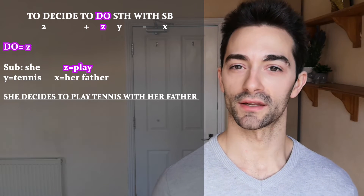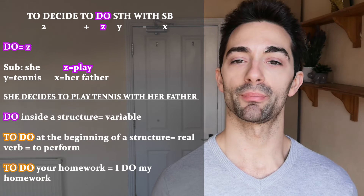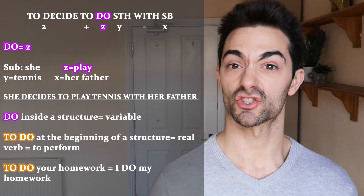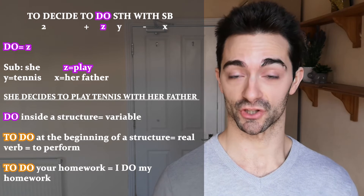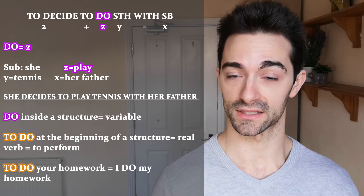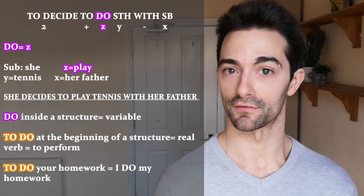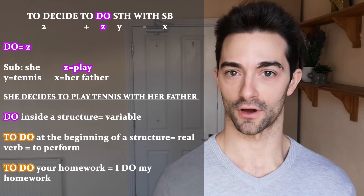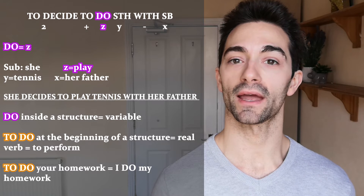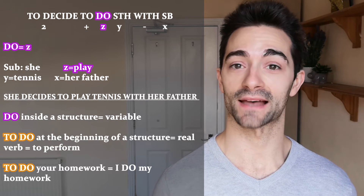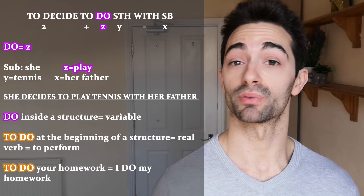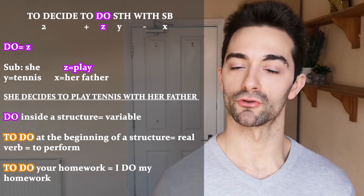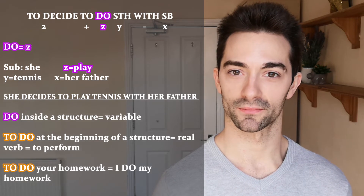Now let's talk about 'do' a little bit more. If do appears inside a grammar structure, it's a variable — it just tells us that in that position we have to put the verb that we need. But if do appears at the beginning of the structure, for example 'to do your homework', in this case do is the main verb and has its own meaning: it means to perform. So 'to do your homework' becomes 'I do my homework' and we can't replace it with another verb.